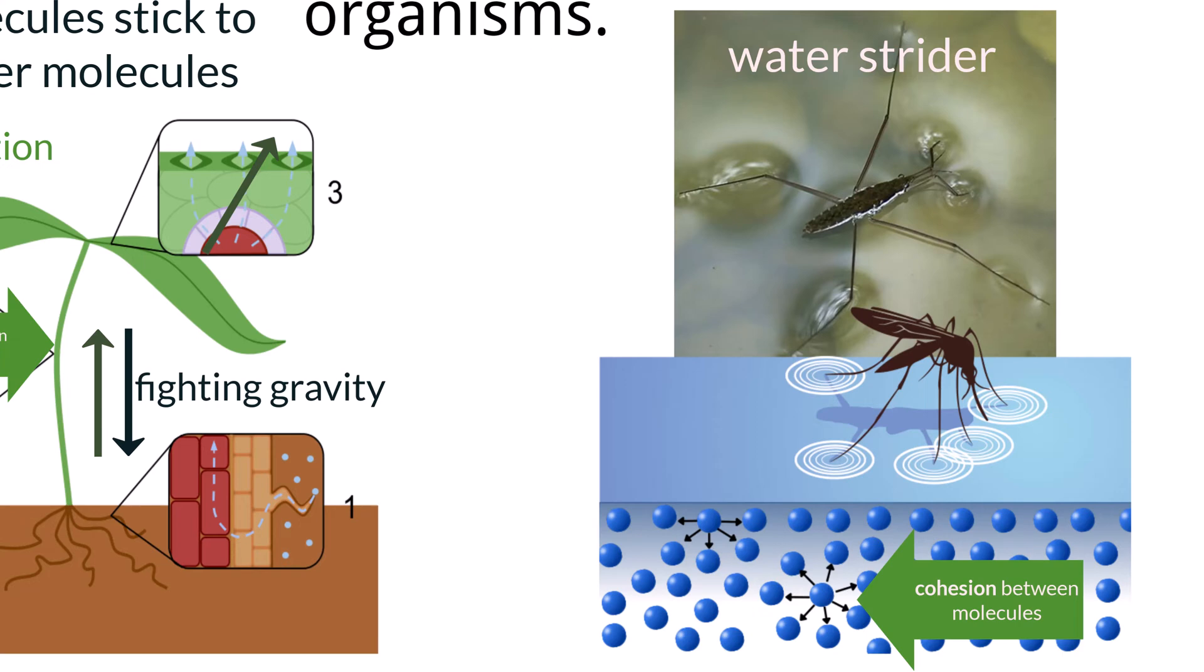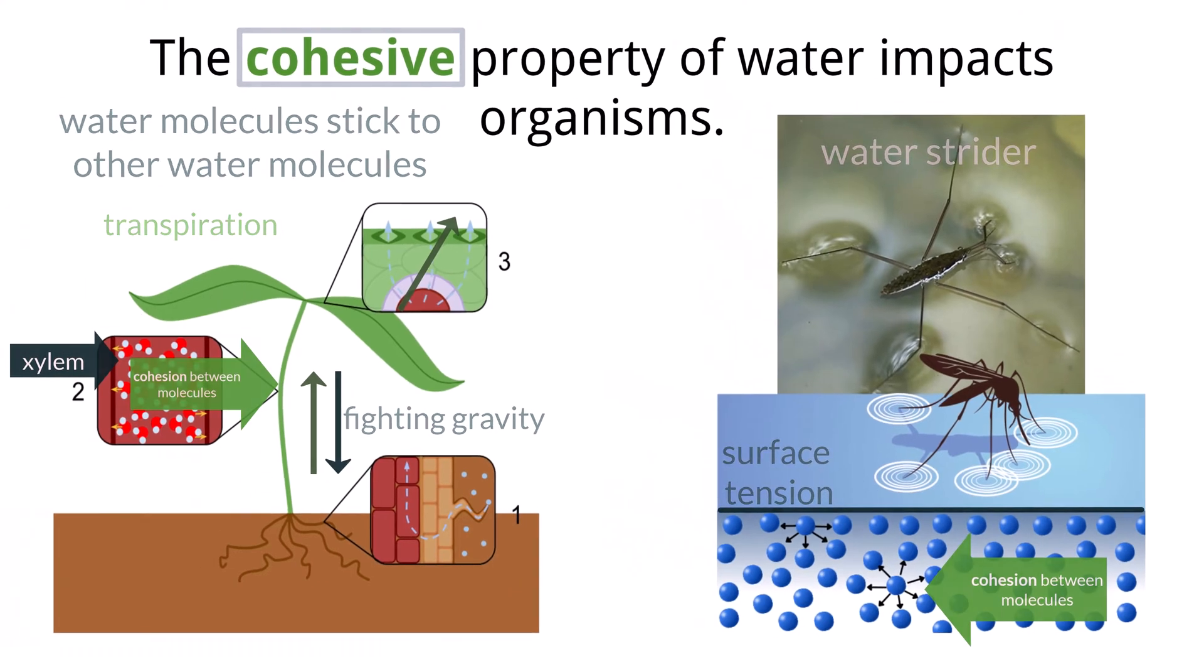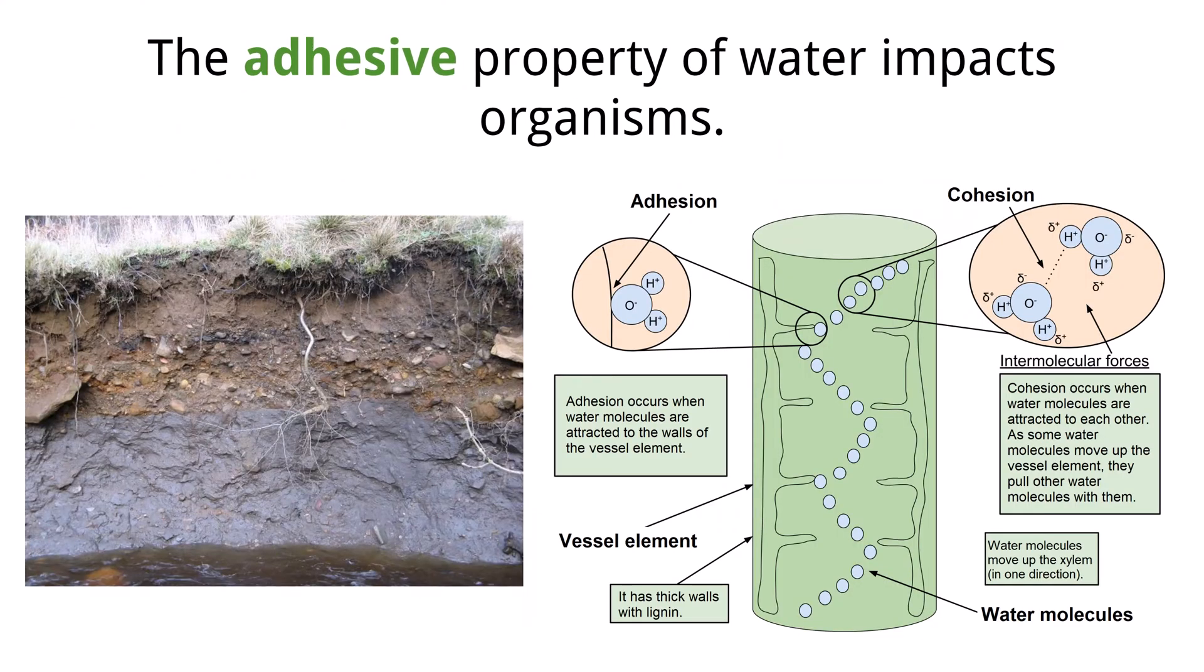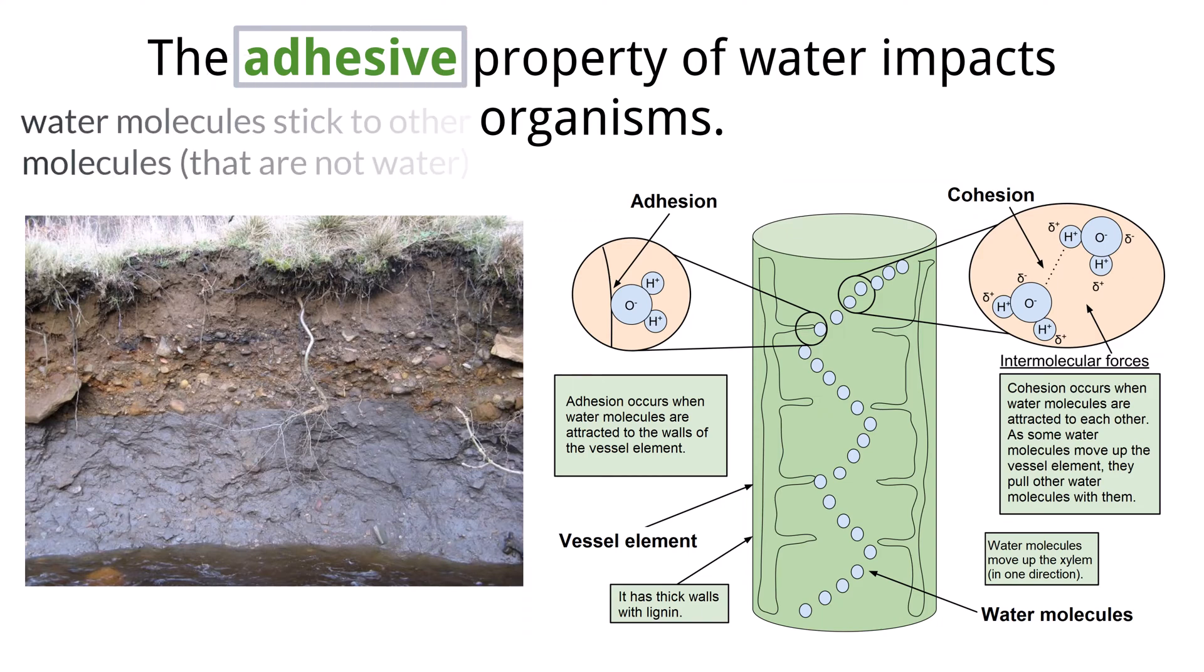So the water molecules continue to stick to each other instead of breaking formation to wrap around and submerge the insect. We call this characteristic surface tension, and without this cohesive property, this surface water habitat would not be possible for the water strider. Another similar important property of water is adhesion, which describes how water molecules can be attracted to and stick to other surfaces.